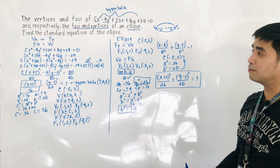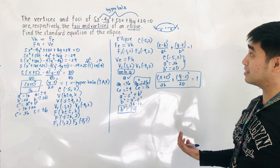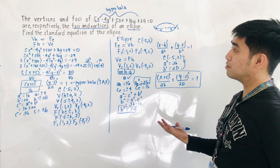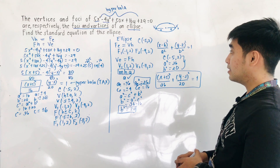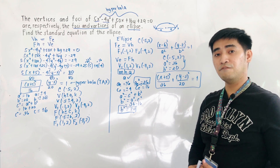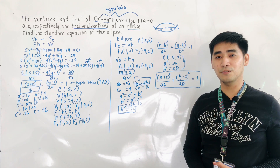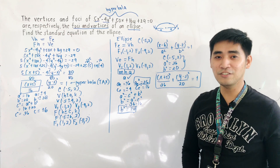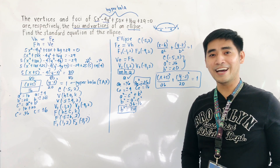The problem asked us: the vertices and foci of 5x² minus 4y² plus 50x plus 16y plus 29 equals 0 are respectively the foci and vertices of an ellipse — find the standard equation of the ellipse. That is how we solve for different conditions relating two conic sections. If you have questions, comments, or suggestions, please message me on Facebook, Messenger, Twitter, or Instagram. I am Engineer Jod Edward Hernandez saying that mathematics is always fun. Goodbye and God bless.